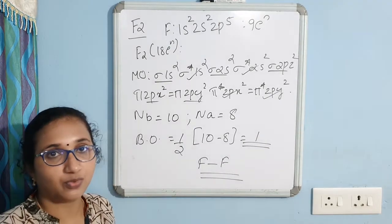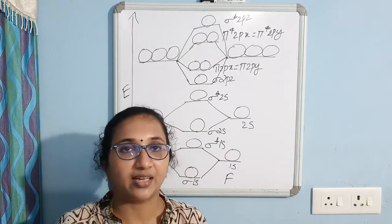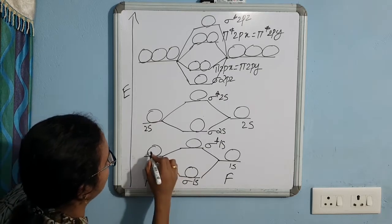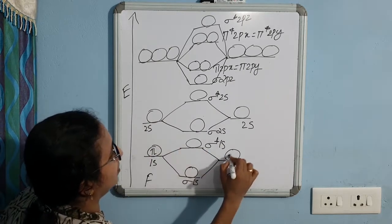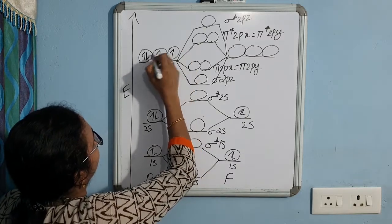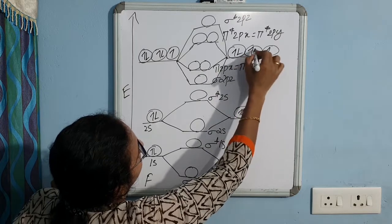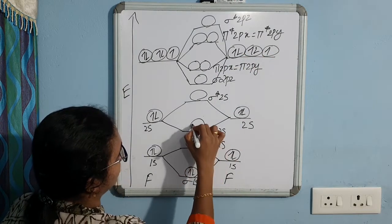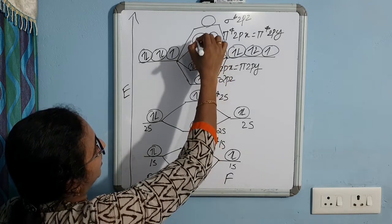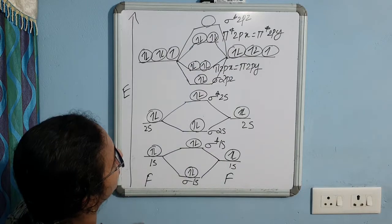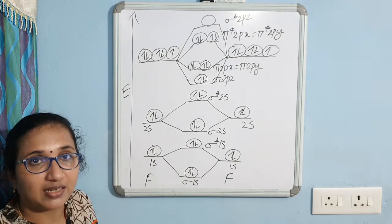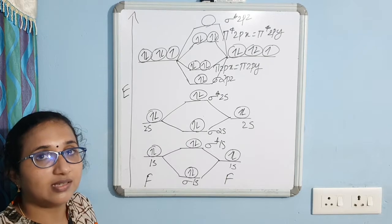Let us now see the MO diagram for fluorine molecule. We fill the atomic orbitals: 1s², 2s², 2p⁵ on each side. The MO configuration is sigma 1s², sigma* 1s², sigma 2s², sigma* 2s², sigma 2pz², pi 2px² = pi 2py², pi* 2px² = pi* 2py². Since there are no unpaired electrons in any of the orbitals, the fluorine molecule is diamagnetic in nature.